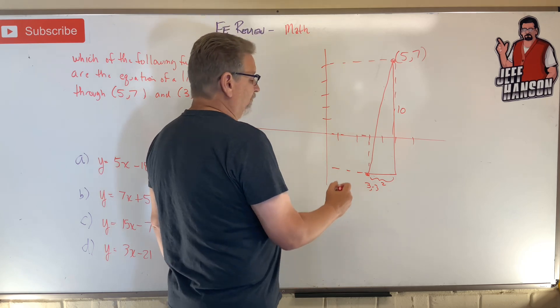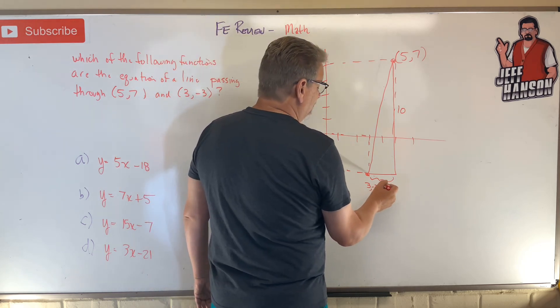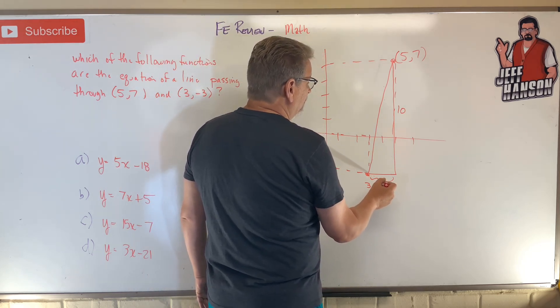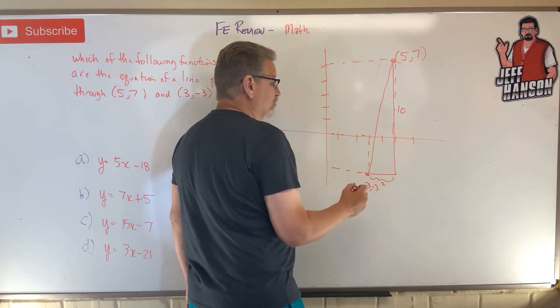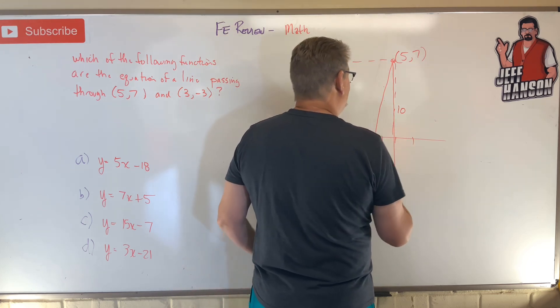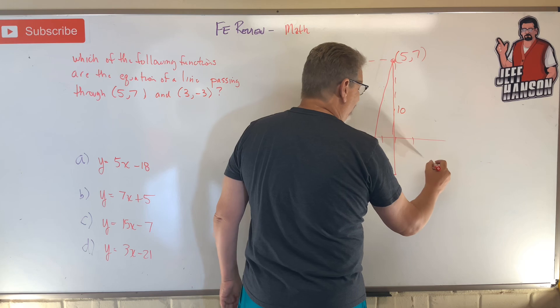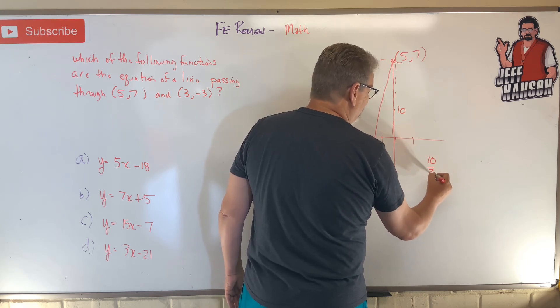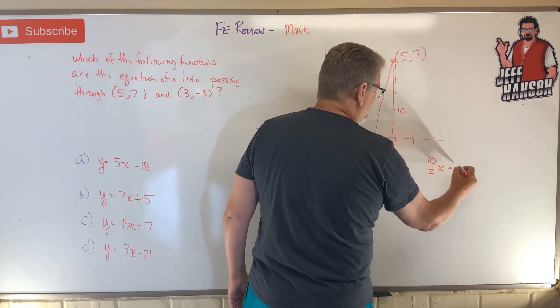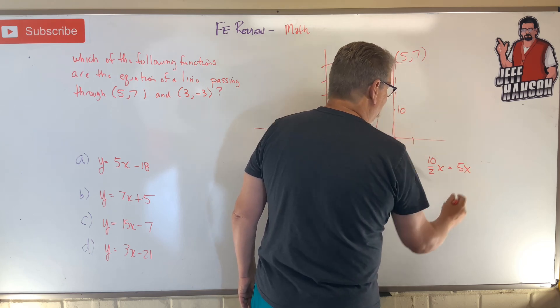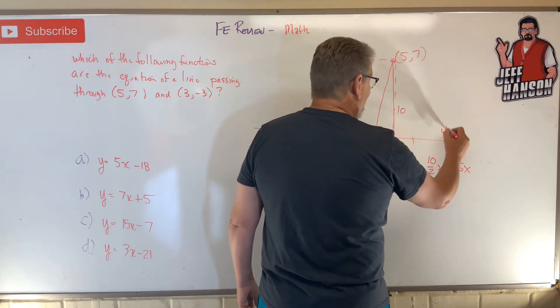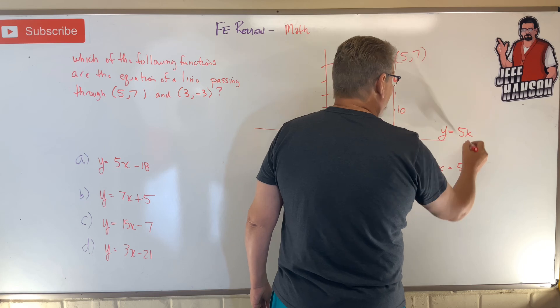Right, so now that I know that, I know that the slope of this thing, rise over run, the rise is 10, the run is 2, and it's going uphill. So I already know that the slope is 10 divided by 2, which is 5x. So y equals 5x.